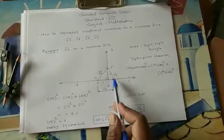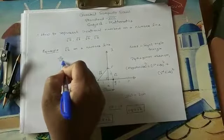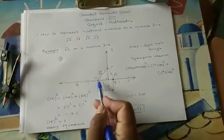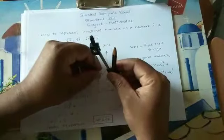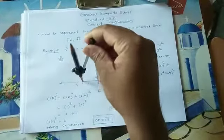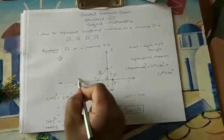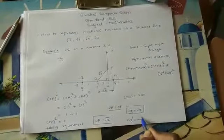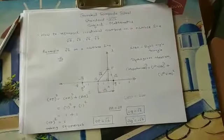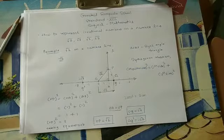Now, if I want to represent minus root 2 on a number line, we follow the same procedure only on the left side of the origin, because on the left side negative integers are there. The distance OQ is plus root 2; if I mark the same distance on the left side, I consider that point as Q dash, which represents minus root 2. So OQ = root 2 and OQ' = minus root 2. Like this we can represent irrational numbers on a number line. I hope all of you understood how to represent irrational numbers on a number line. Thank you.